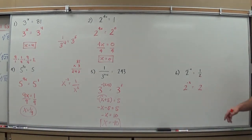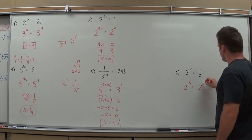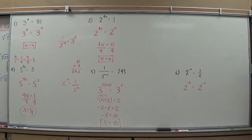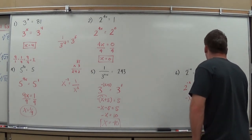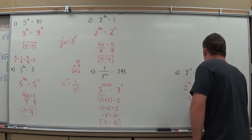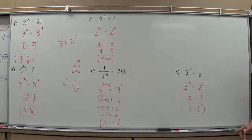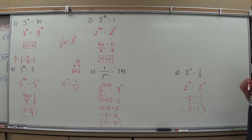Last one: 2 to the negative x equals 1/2. I need an exponent that makes 2 flip to give 1/2. Using negative exponents: 2 to the negative 1 equals 1/2. Setting exponents equal: -x = -1, so multiply both sides by -1, and x equals positive 1. Checking: 2 to the negative 1 is 1/2. Correct.